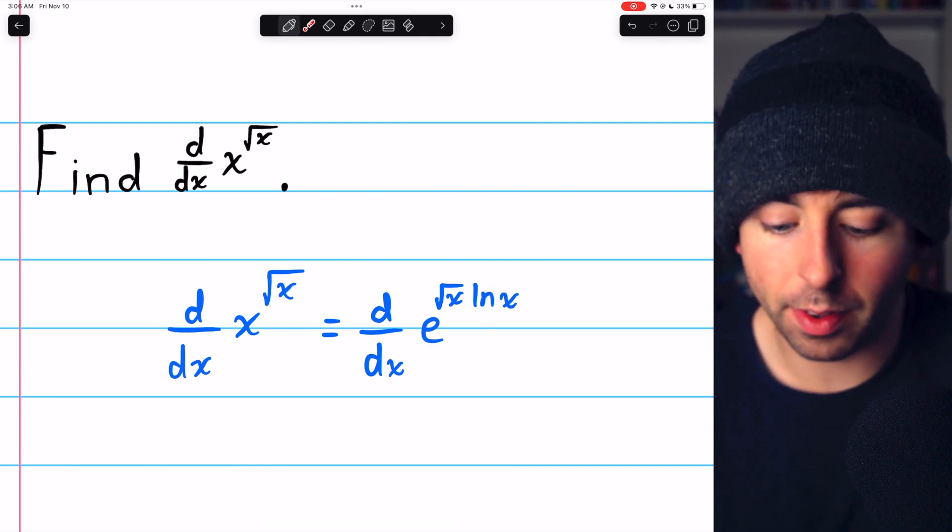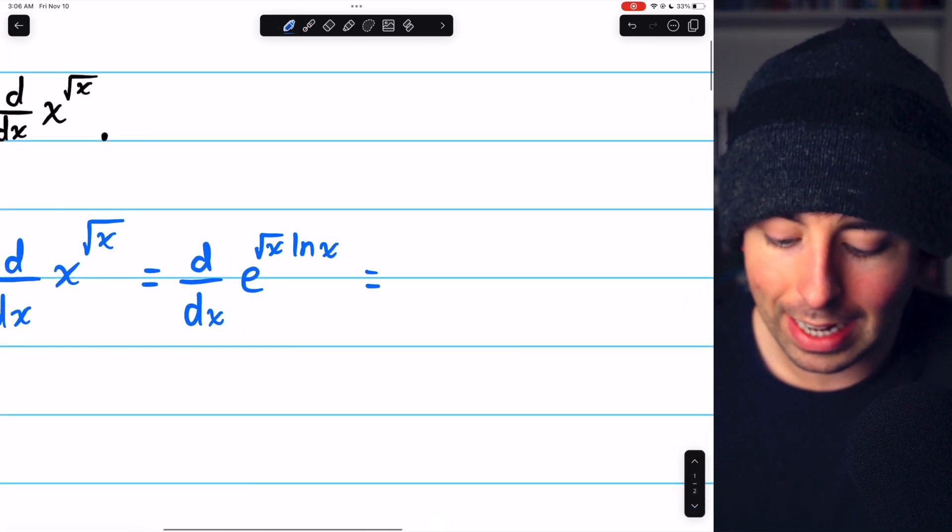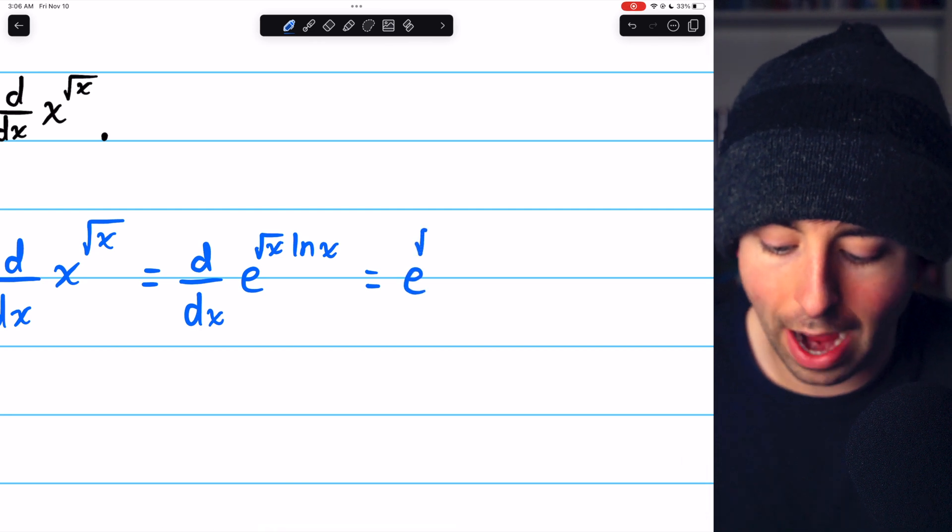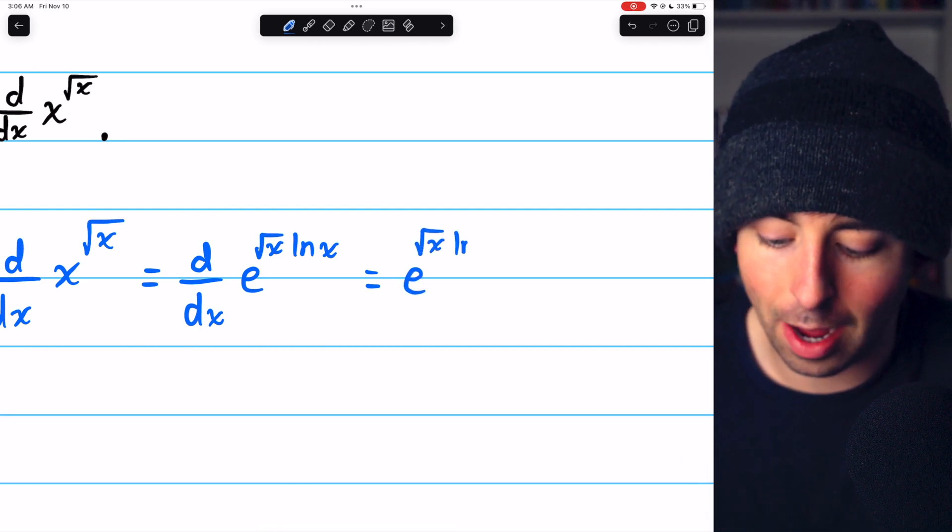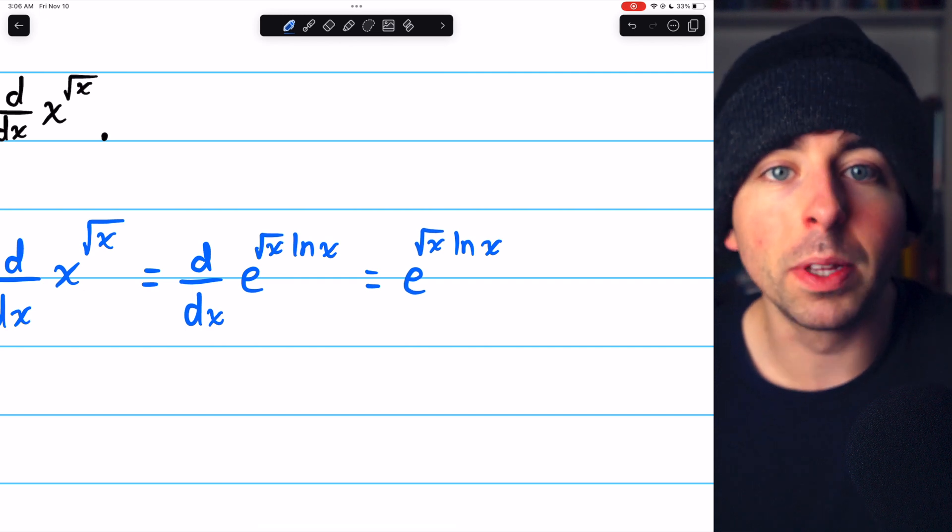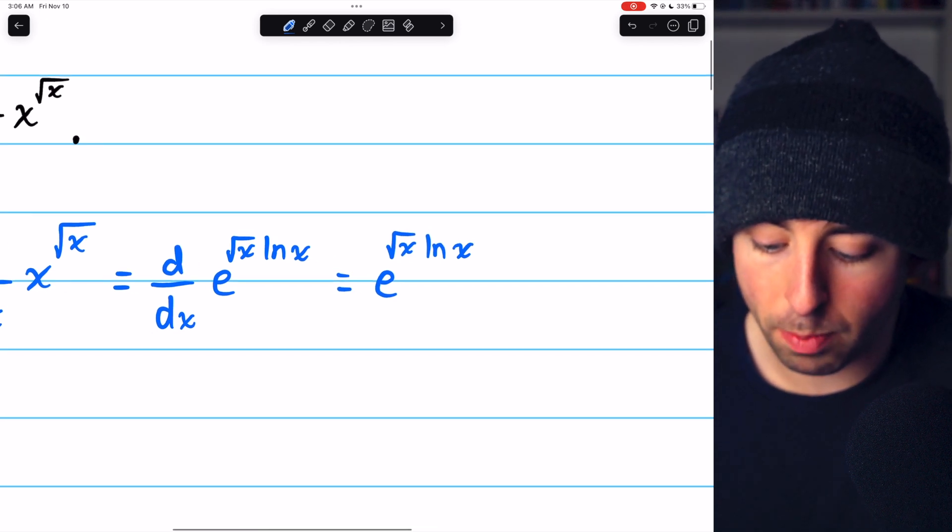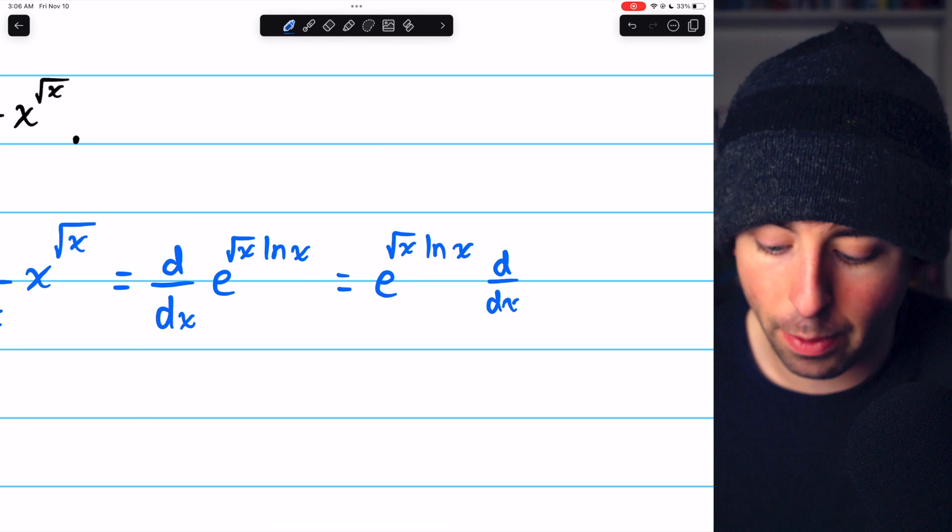The derivative of an exponential function is pretty straightforward. It's just e to the power, so e to the root x times the natural log x. But then by the chain rule, we need to multiply this by the derivative of that power.